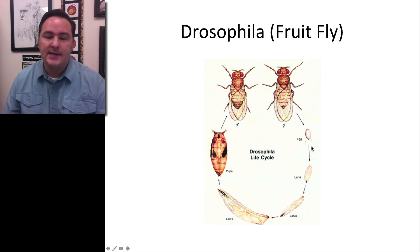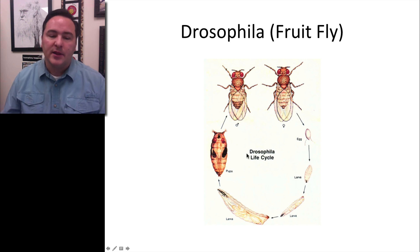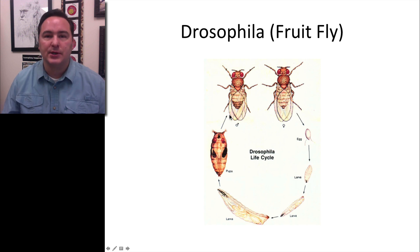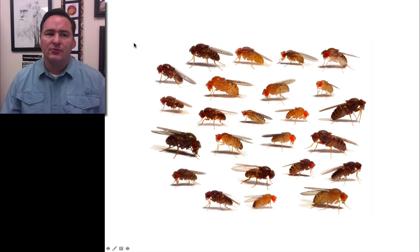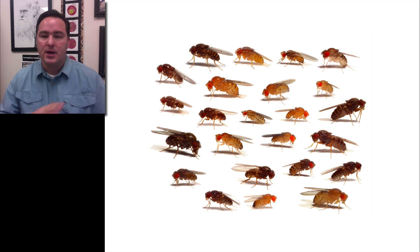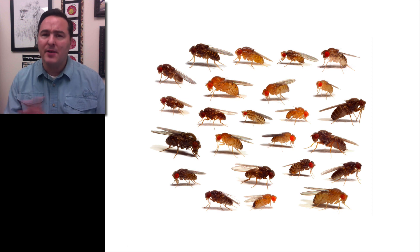Fruit flies lay eggs. The eggs hatch and become larvae, and the larvae get bigger each molt until they become a pupa. They go through their pupal stage, where metamorphosis takes place, and then they become adults. If you look at Drosophila melanogaster from the exact same species, there is a wide variety of different forms — some are darker, some are lighter, bigger, and so forth. There is quite a bit of variation even within the same species.